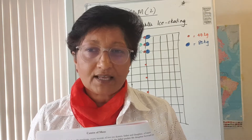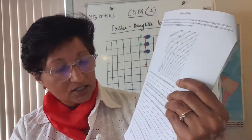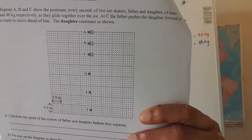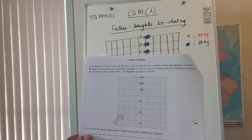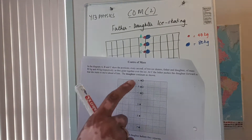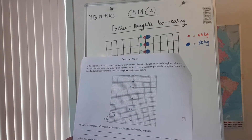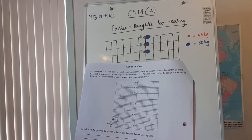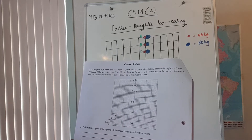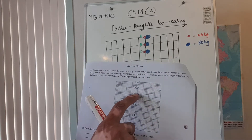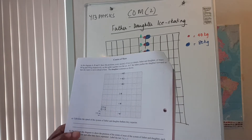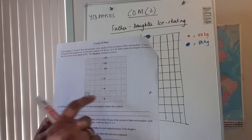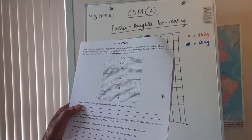There are a couple of questions we need to do in this topic about center of mass. One of them is the worksheet on page six in your booklets. The question involves a diagram where A, B, and C show the positions every second of two ice skaters — a father and daughter of mass 80 kilograms and 40 kilograms respectively — as they glide together over the ice. At C, the father pushes the daughter forwards so she starts to move ahead of him, and the positions D, E, F are the positions of the daughter.